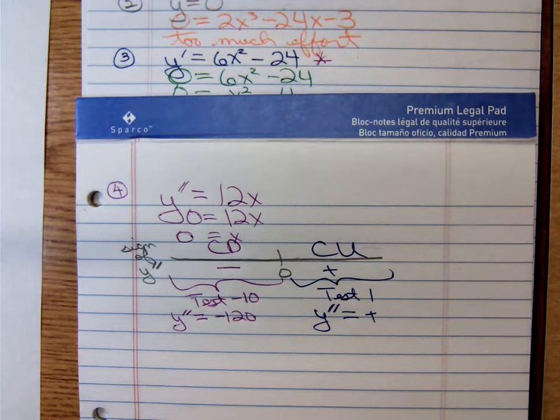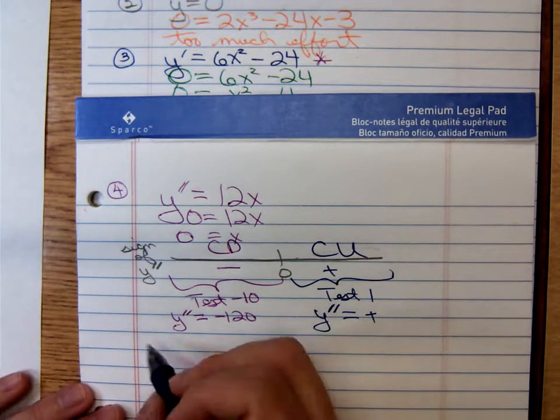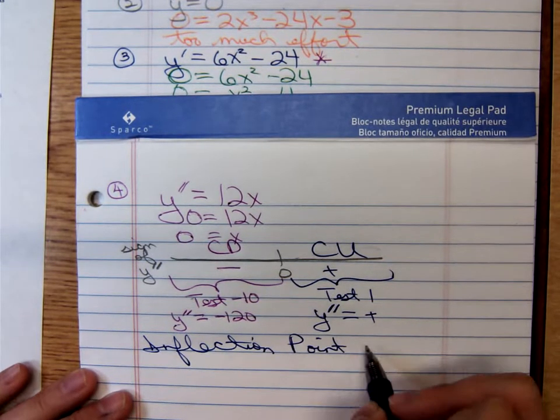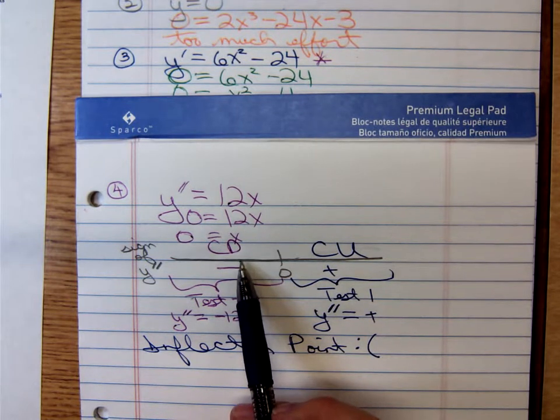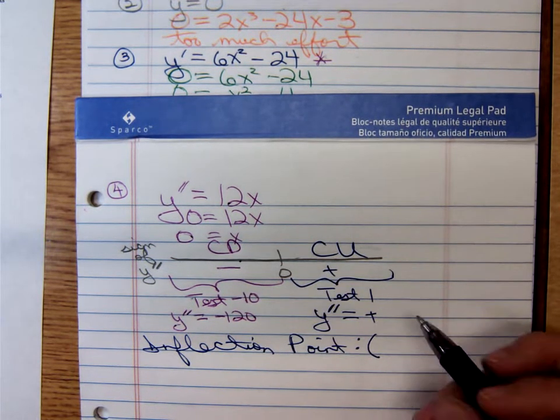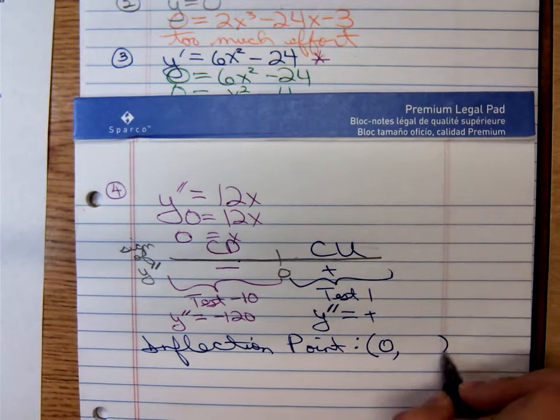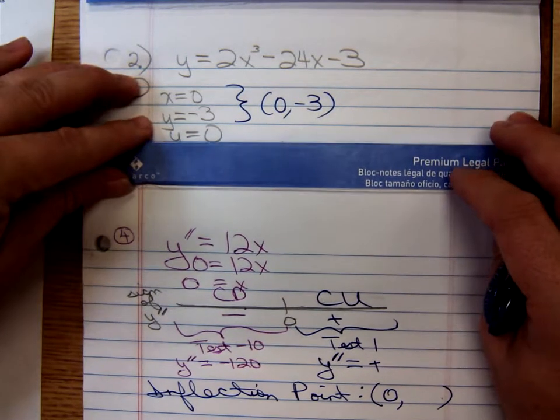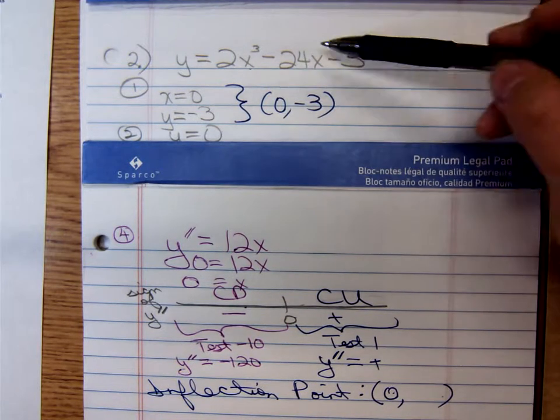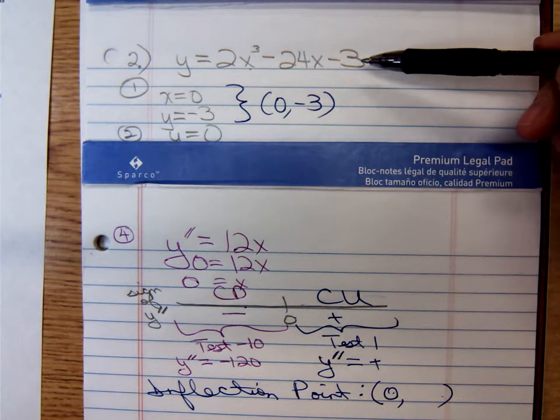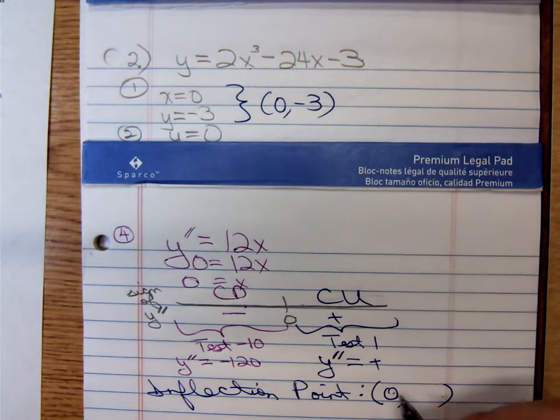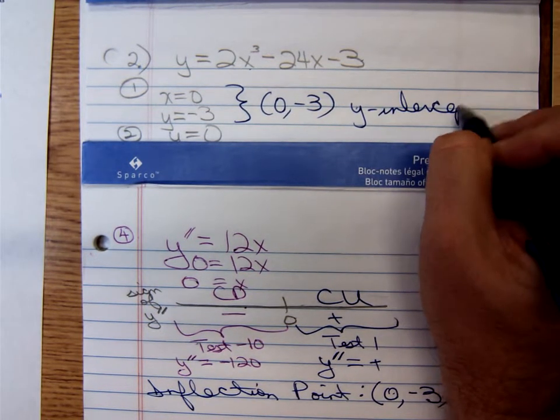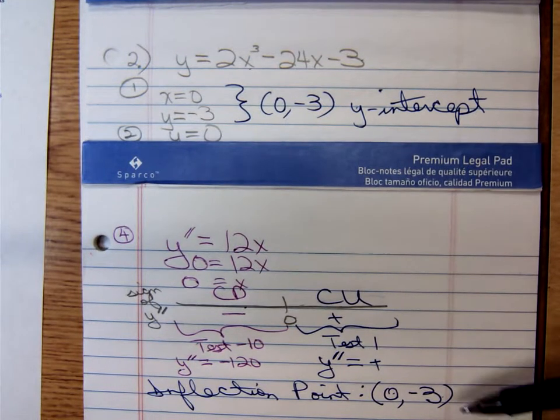Let's write out that inflection point. Inflection point: we have one. Notice that the concavity changed from concave downward to concave upward. We have an inflection point occurring when x is zero. How do we find the y coordinate? Plug the zero into the original. And look at that, it just so happens that our inflection point corresponds to the y-intercept. That's where the graph changes concavity.